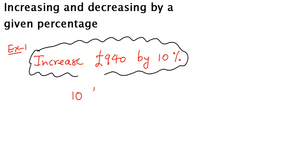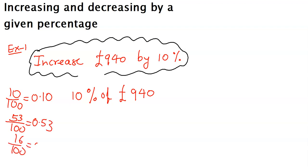10 percent of 940. So 10 percent means 10 divided by 100, and if any number you divide by 100, you can write 0.10. If it's 53 divided by 100, then you can write 0.53. If it's 16 divided by 100, then you can write 0.16. You need to put decimal after two places. So 10 percent means it is 0.10, of means times, and 940.